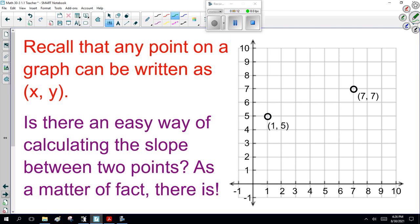Recall that any point on a graph can be written as (x, y), with x almost always given first, then the y value. Is there an easy way of calculating the slope between two points? As a matter of fact, there is.